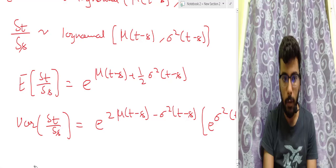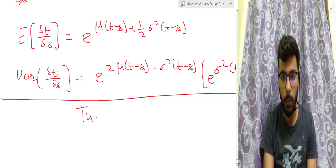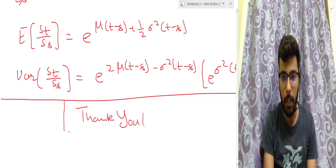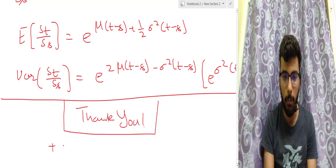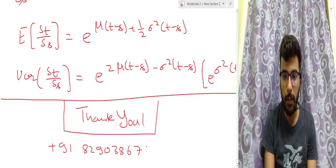In the next video I will solve the mathematics and reach from the SDE to S_T = e^(Z_T), and introduce properties of all three Brownian motions — standard, generalized, and geometric. I will restrict most videos to about half an hour. Thank you, and if you want full lectures you can contact me at +91 8290 386768. I'm happy to help with any doubts relating to actuarial science.